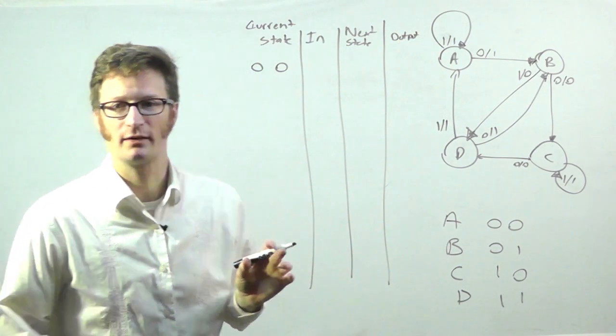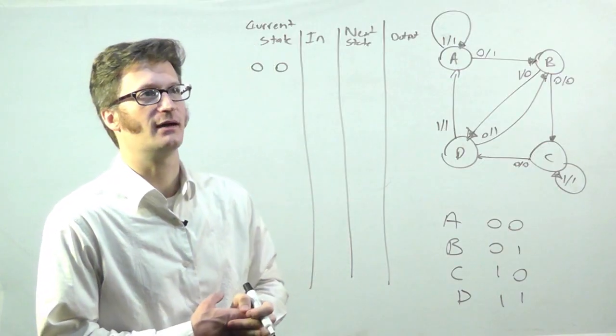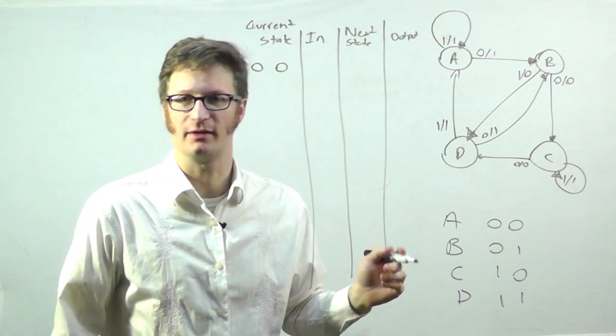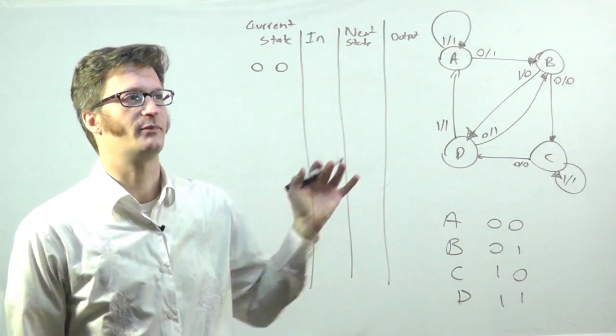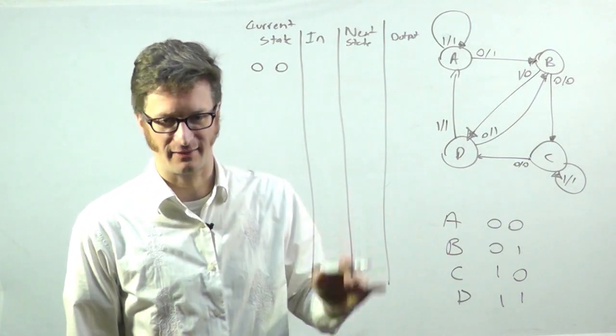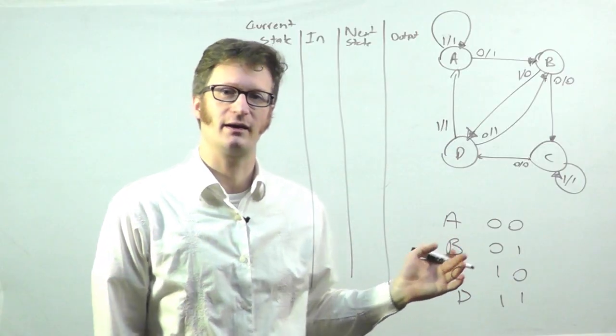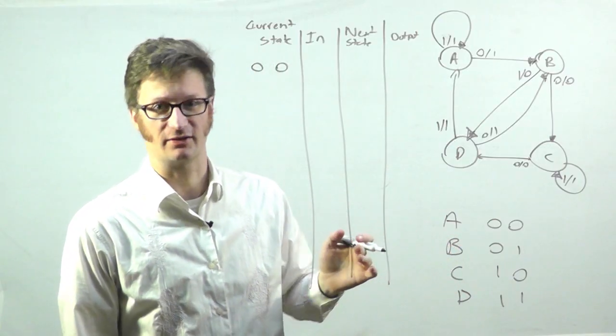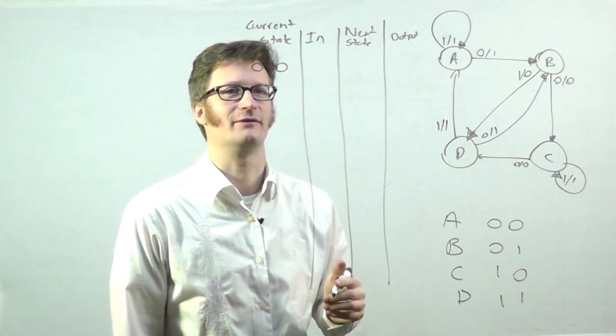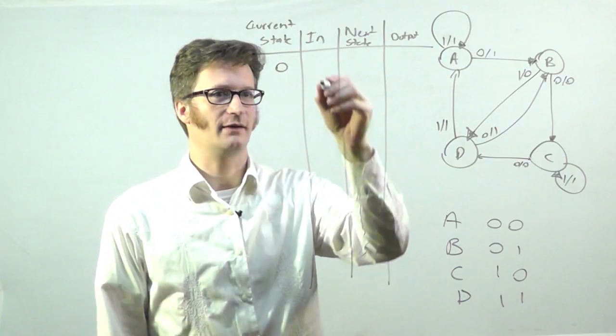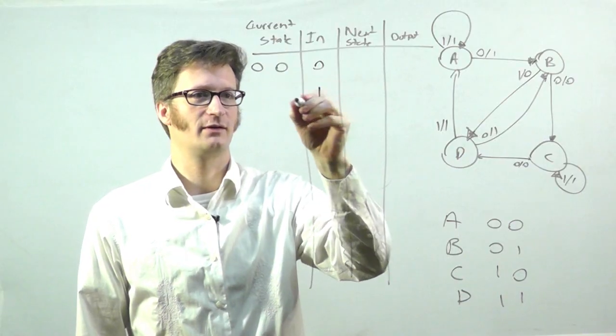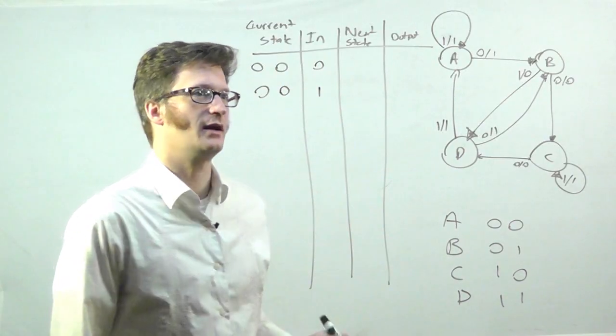And this is one of two different ways to draw a state table. I'll show another one in future videos. This one is, this way is better for going to a synthesized circuit. And the other way is better for state reduction, which I will also talk about in a future video. So, if I have input of 0 and 1.